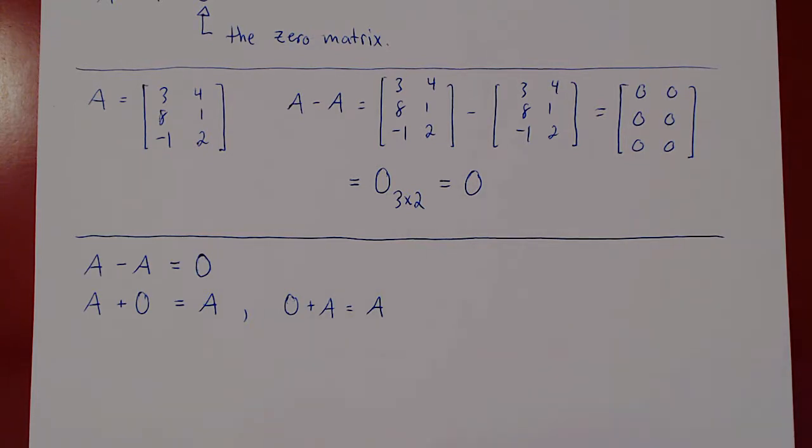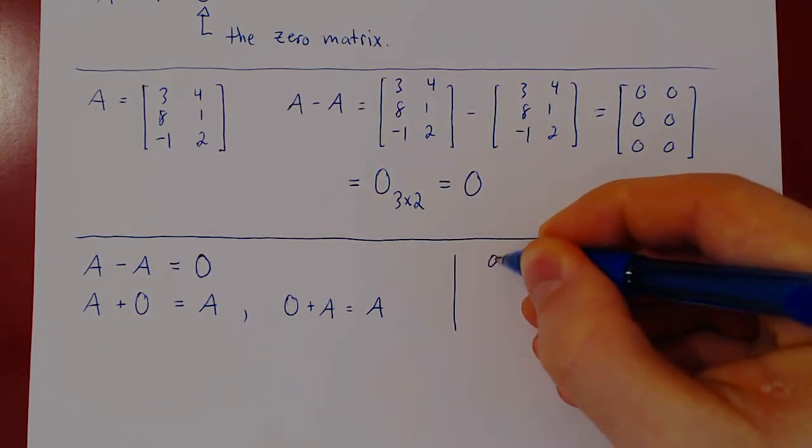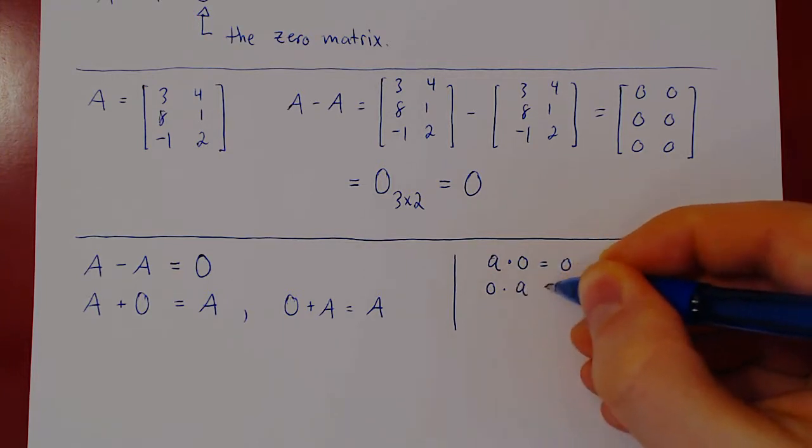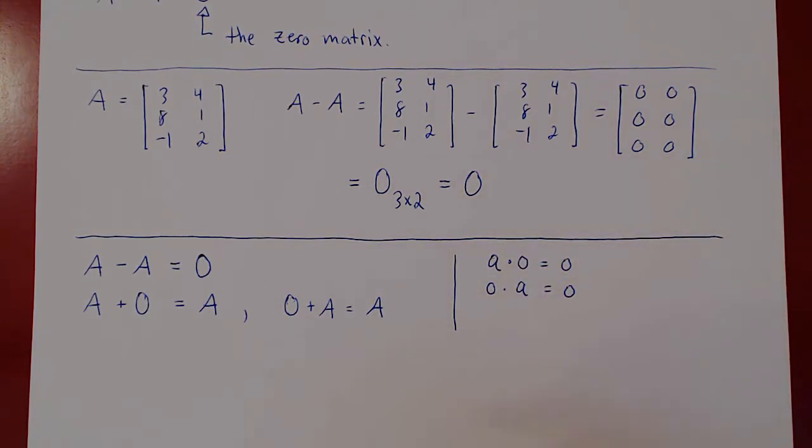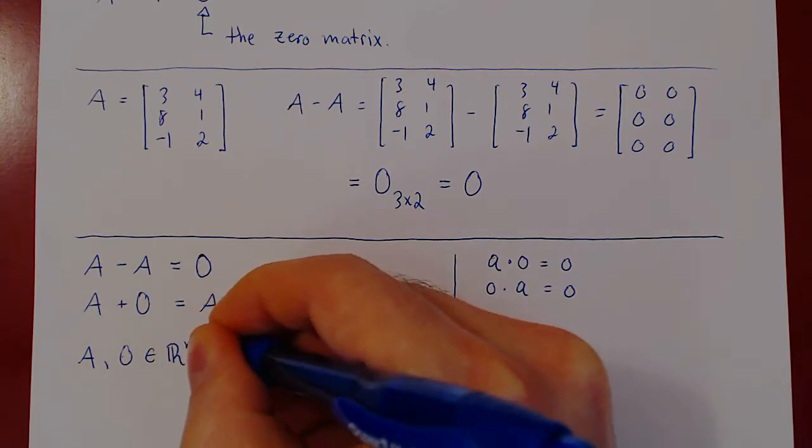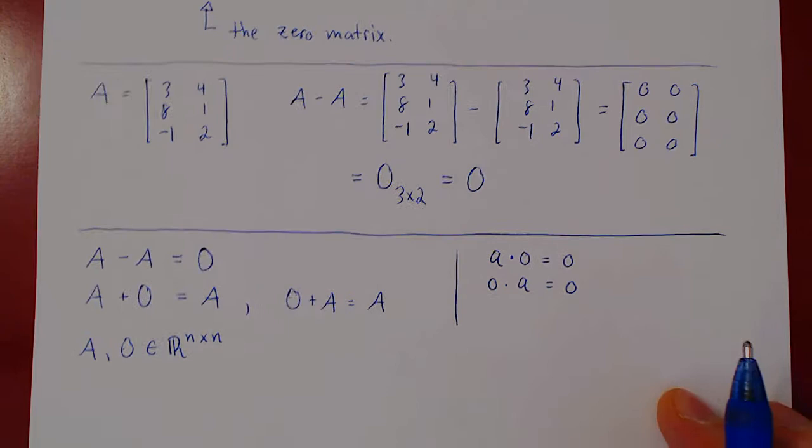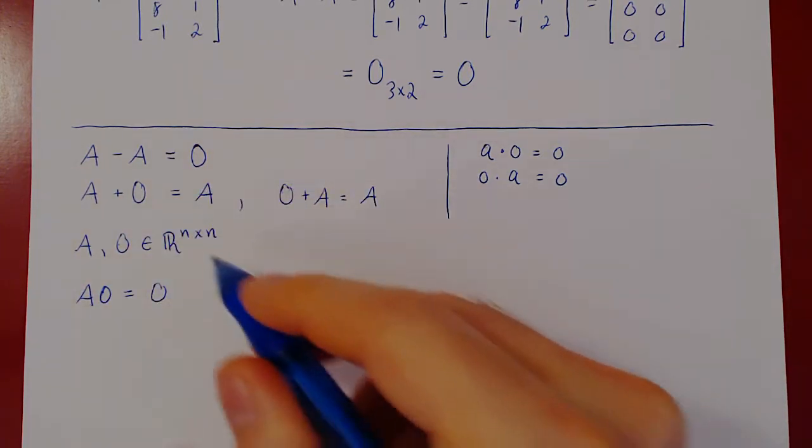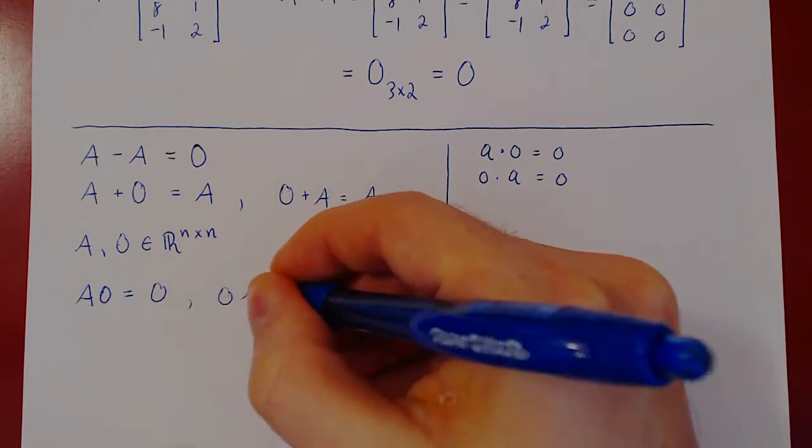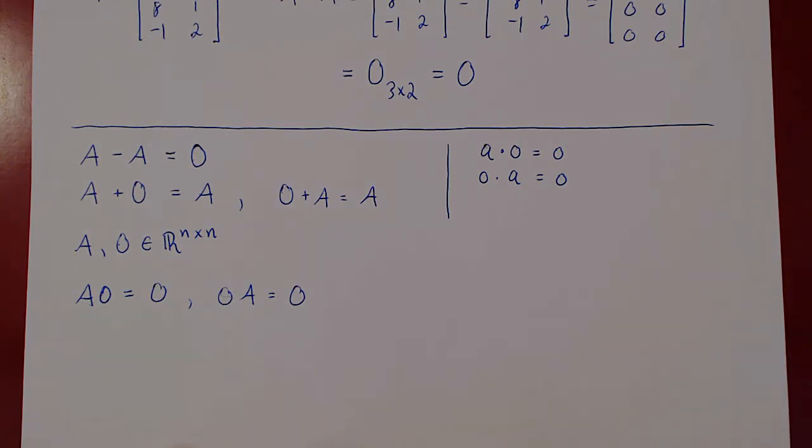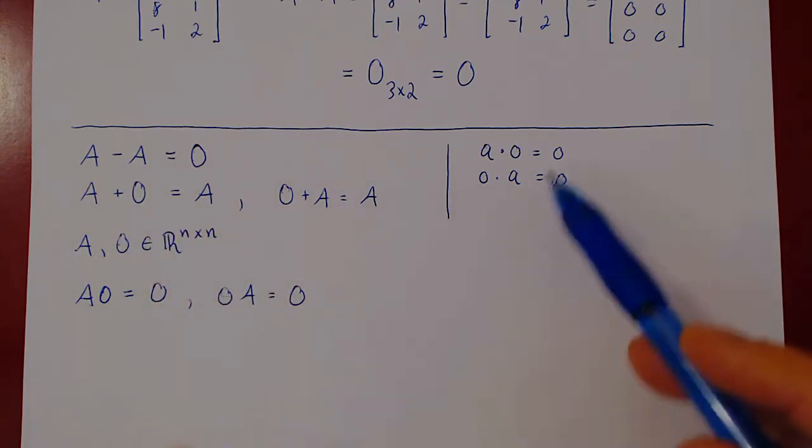One last property. What if you have square matrices of the same size, and zero and A, and you multiply them together? If lowercase a was a real number, then lowercase a times the zero real number equals zero, and zero times the real number also equals zero. Well, this is also true of matrices. So if A and zero are both square of the same size, so they're both n by n matrices, A times zero will be equal to the zero matrix. It will still be an n by n matrix. And so you see quite simply, when you handle matrices algebraically, you can use the zero matrix as you would the zero real number.